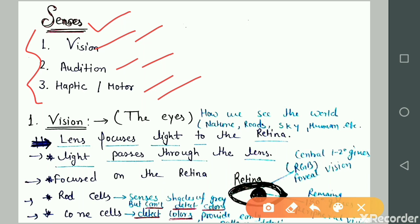First, we start with the vision concept. Vision is related to the eyes, how we see the world and sense colors, nature, roads, sky, human beings, buildings, etc. How do eye senses work? How does the eye sense these things? First is the lens.